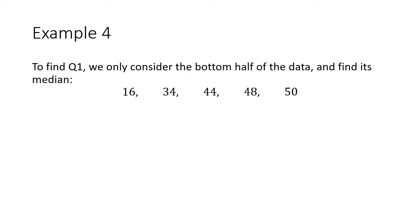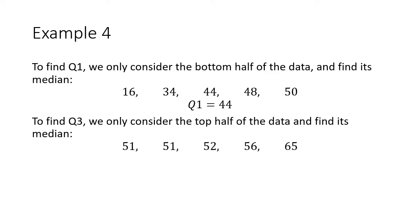I want to find Q1. I'm just going to consider the bottom half of the data. I'm only taking the five smallest data values now. There's 10 scores total. I want the bottom half of those bottom five. I want to find the median of those bottom five. The median is the one in the middle. Clearly, Q1 is going to be 44. To find Q3, I want the top half of the data. Now, I look at the other half of my data here, the five largest values. And I find the median of this set of data. The median here is 52, right there in the middle.